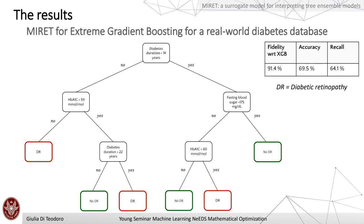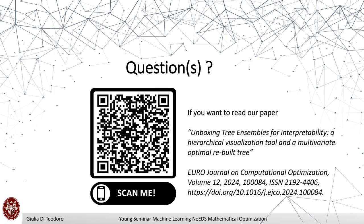There is also an example of applying MIRET when an extreme gradient boosting model is trained on a real-world diabetes database to predict the onset of diabetic retinopathy. This is reported to show how such a tree can create an easy-to-follow decision structure in a medical application, underlining which features contribute most to a given prediction and with which threshold. That's everything — our paper has been published this year in the INFORMS Journal on Computing. Thank you.